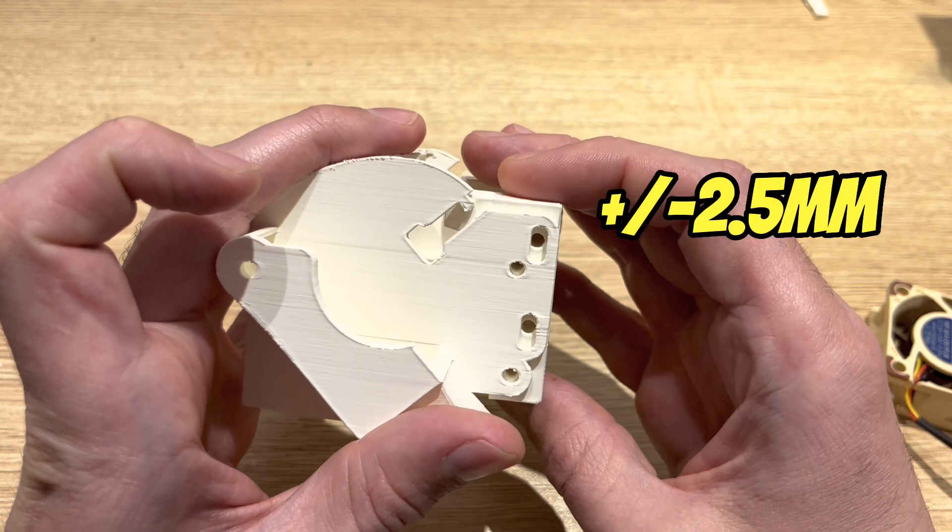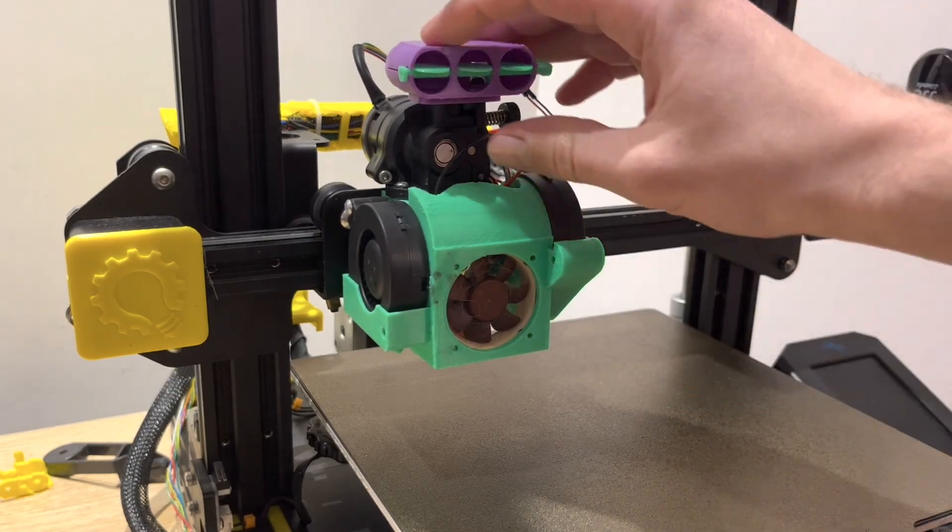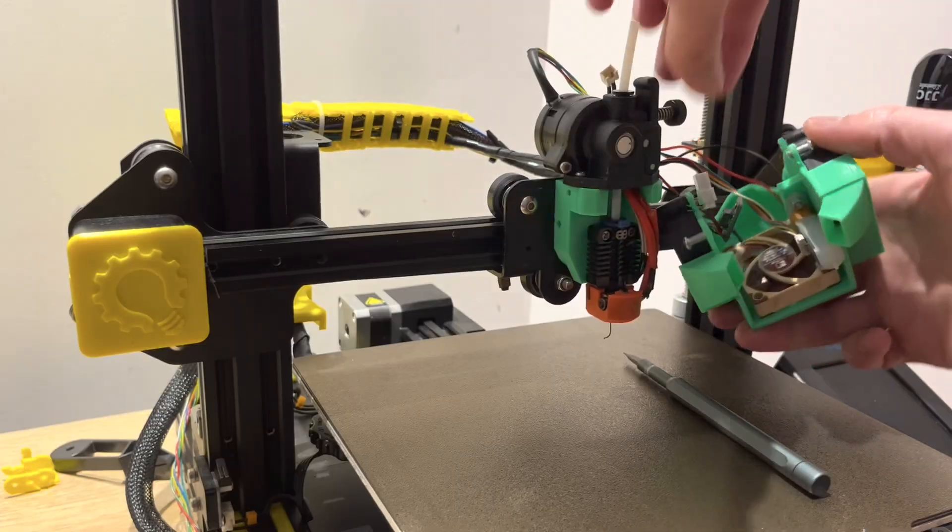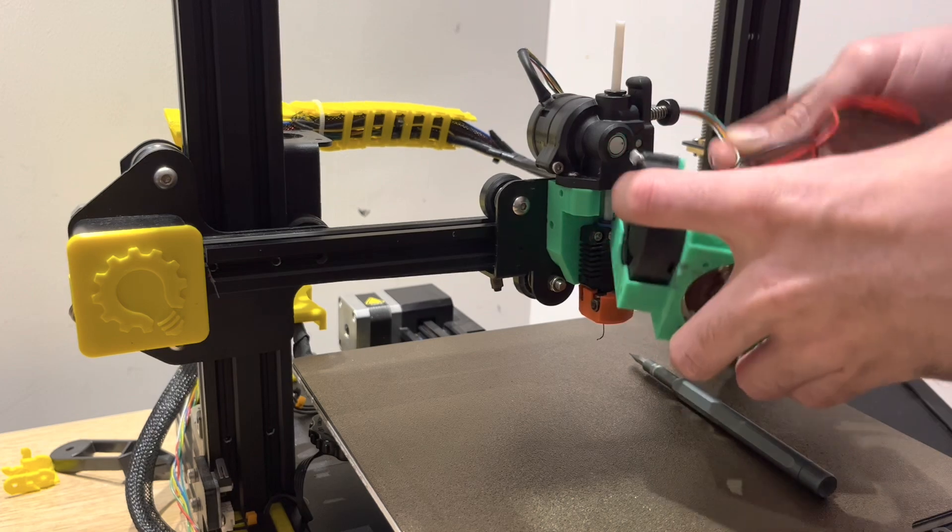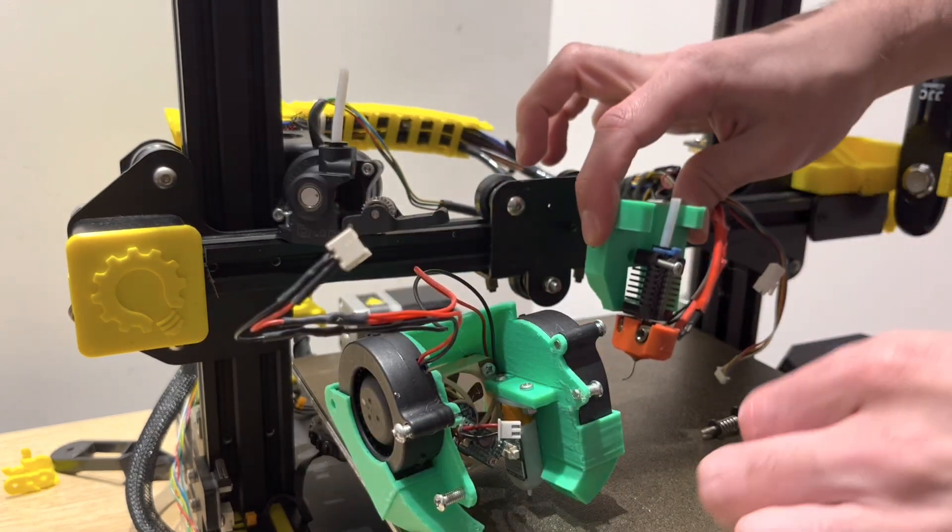Let's get the old printing head taken apart and get the new one put back together. There's just a few steps here. First we're going to remove this front shroud, then we're going to remove the extruder from the top, and finally the hot end from the base plate.